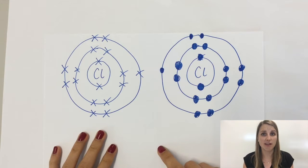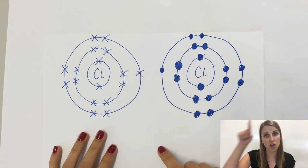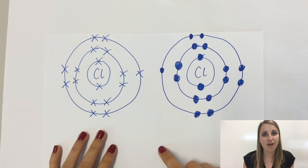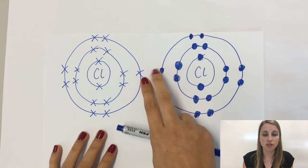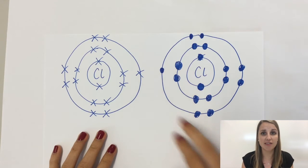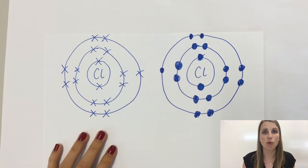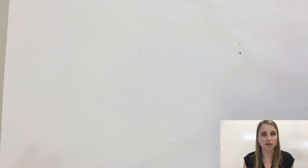Whereas last time in the ionic bond, I could just move one electron from one side to the other, I can't do that this time. It doesn't work. For a covalent bond, what they do is they share electrons. And these two electrons in the middle here, the unpaired ones, will be shared between two chlorines. Let me show you what that looks like.